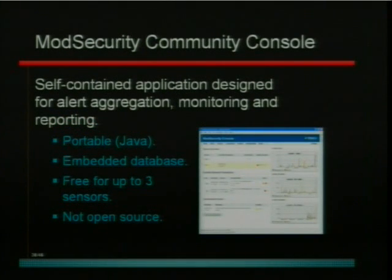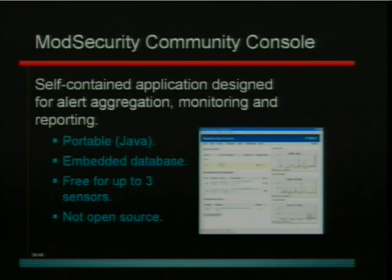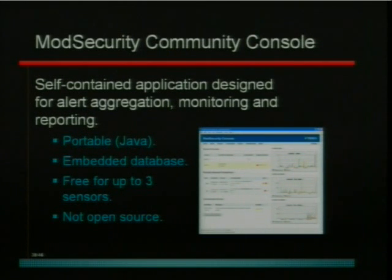The second project is the ModSecurity community console. It's not an open source product, but it's a free one. It supports up to three ModSecurity sensors, and you can collect alerts from these three sensors. There's a nice GUI that allows you to look at all your alerts, produce reports, and send emails. It provides the minimum you really need to use ModSecurity comfortably. The one major function that's missing is control of ModSecurity sensors — you would still have to configure ModSecurity by hand.